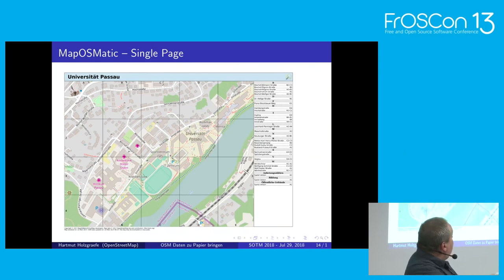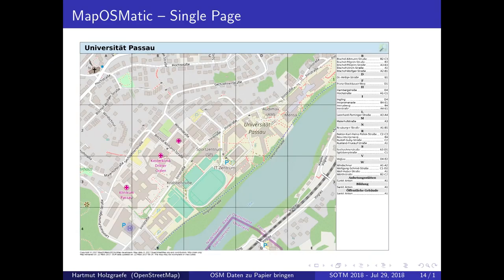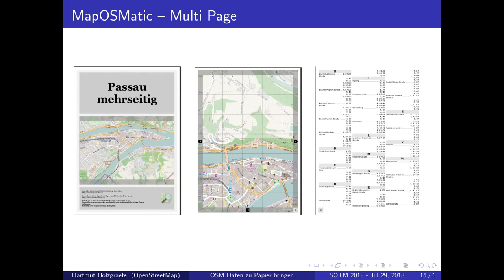The fine thing about this solution is it supports SVG, PDF, and PNG so you can post-process the output. It also extends the map area so it perfectly fits the available paper space, picks the right zoom factor and resolution to make it look really good on paper. Optionally it can create a street index for the area you render, and it can even produce multi-page output — a street atlas in book format — where each map page has small numbers on the side telling you on which page the map continues.